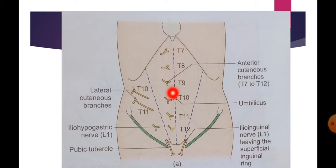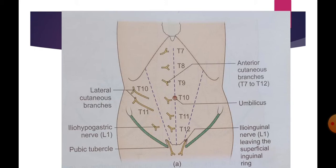The nerves are arranged in serial order: T7 is near the xiphoid process, T10 is at the level of the umbilicus, the iliohypogastric nerve is 2.5 centimeters above the superficial inguinal ring, and the others are at proportionate distances between them.